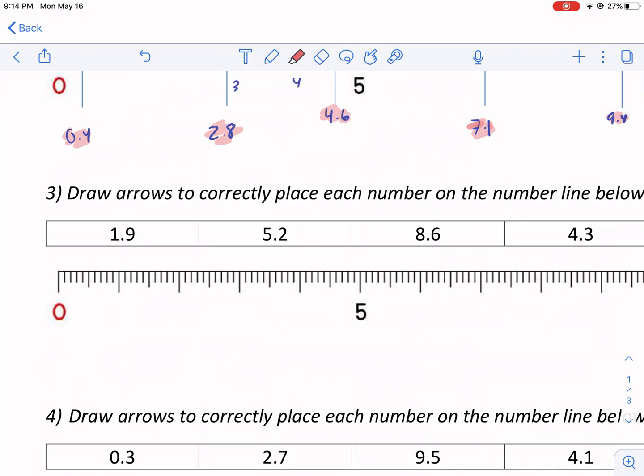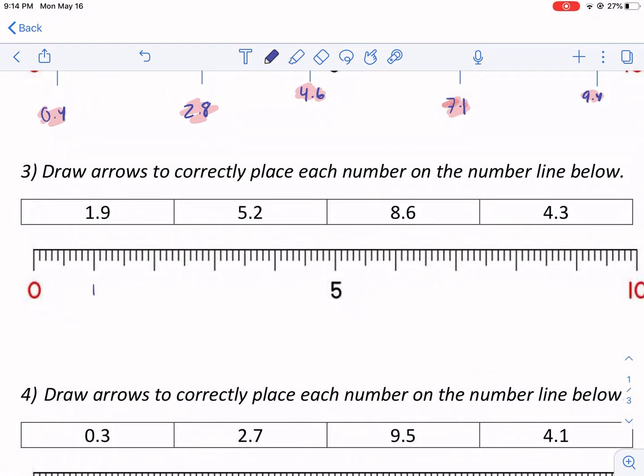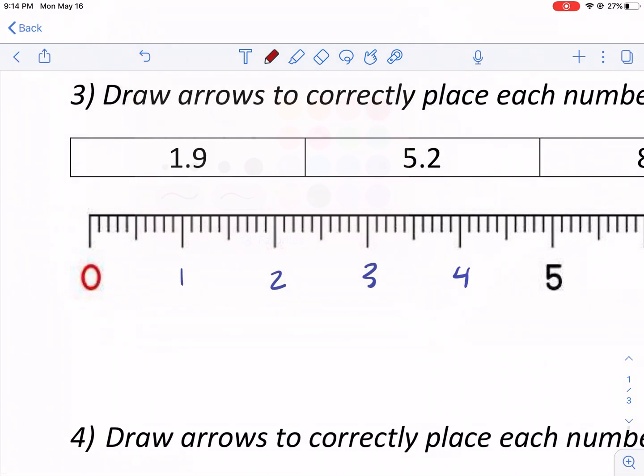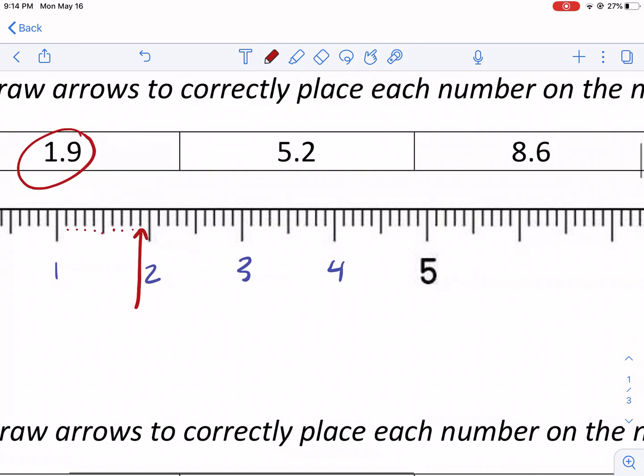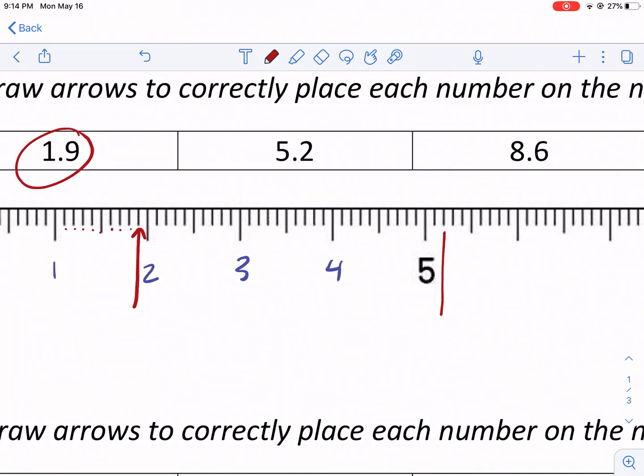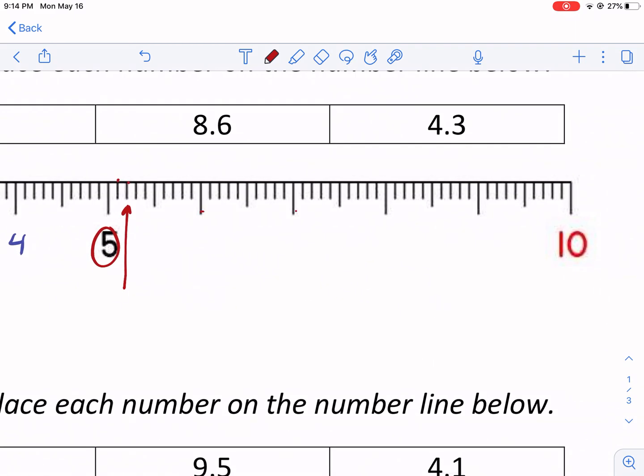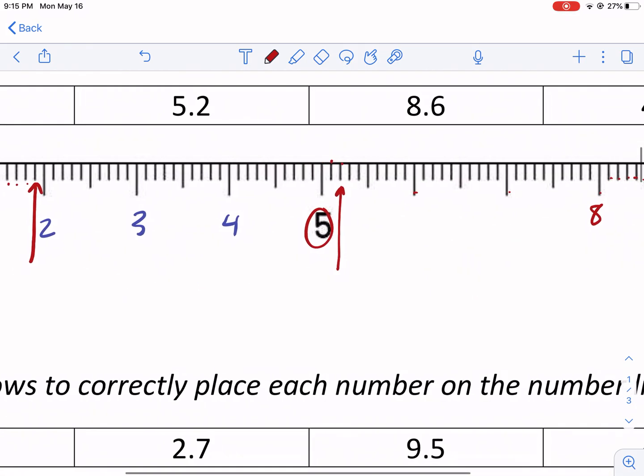Draw arrows to correctly place each number. So this one's a little bit different. I like this. Math Salamanders never disappoints with their worksheet variety. So we have 1.9 here. And I'm just gonna count 1, 2, 3, 4, 5, 6, 7, 8, 9. Right there, draw my arrow. Be very precise with this. 5.2, I need to be very precise. And that's 1, 2 after the 5. I have 8.6, 5, 6, 7, 8, 1, 2, 3, 4, 5, 6. So right here is 8.6 because there's the 8. And then 4.3, they're making me backtrack right there.